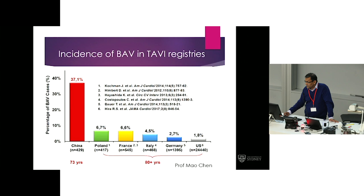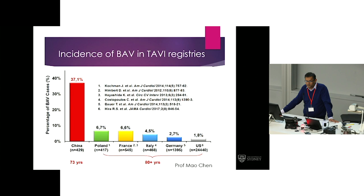This is a slide from Professor Mao Chen, and this looks at the incidence of bicuspid valve in TAVI registries. It's quite apparent that it's extremely low around the world, with the exception of China. There are a couple of theories as to why that is the case, but I think it probably reflects the lower age group of the population being treated in these areas. Nonetheless, they have extensive experience with it.